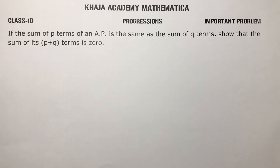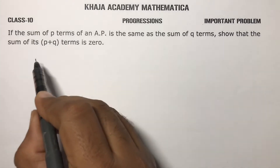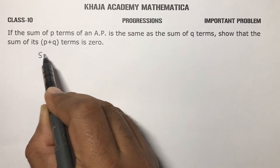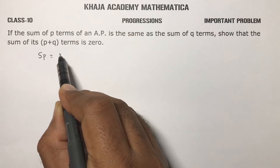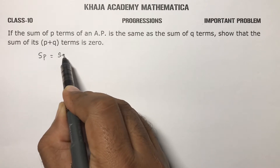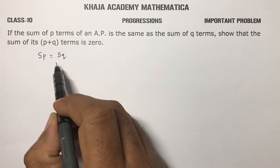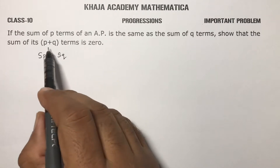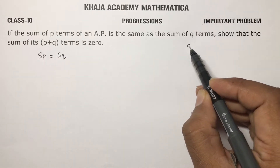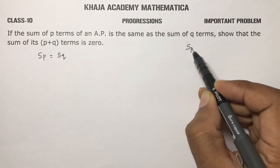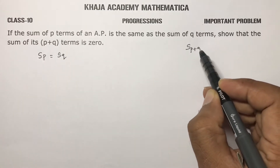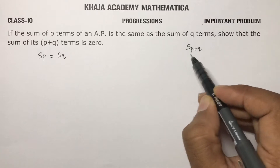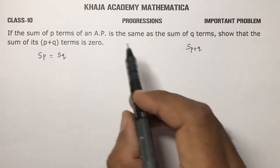If the sum of p terms of an AP is the same as the sum of q terms, then show that the sum of its p plus q terms is 0.